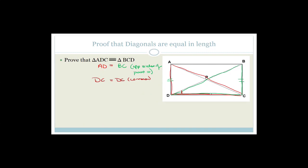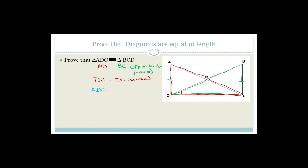That line DC is common. We also know that these two angles — angle ADC and angle BCD — must equal 180 degrees, because they are co-interior angles. Does that help us prove that the triangles are congruent? So far we've got that this side equals this side and that DC is common.